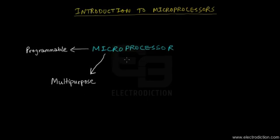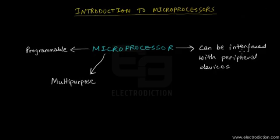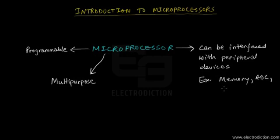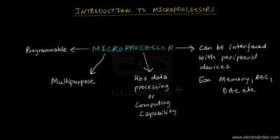You can also interface a microprocessor with several types of peripheral devices — for example, memory devices, and data converters like ADCs or DACs. And finally, it has a data processing or computing capability.